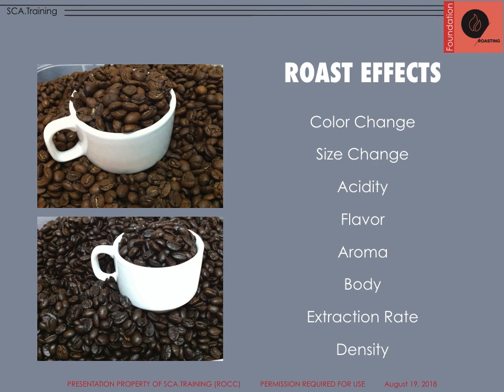If you wanted to maximize acidity, you'd roast it lighter. If you wanted to maximize bitterness or extraction rate, you'd roast it darker. Extraction rate and body are also going to increase over time because the coffee becomes more brittle — easier to extract, easier to get those compounds to absorb into the water. Aromas will change too, moving through enzymatic, caramelized brown sugars, and dry distillation as we go through the coffee roasting cycle.